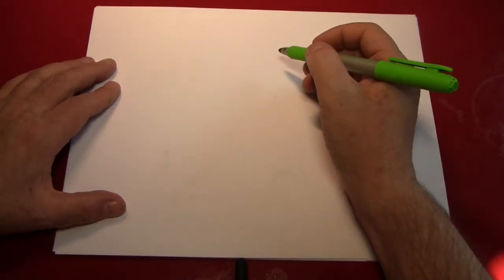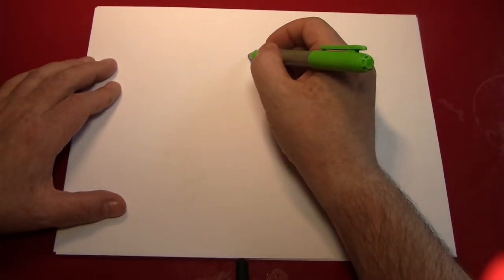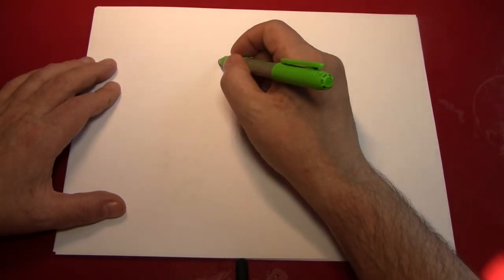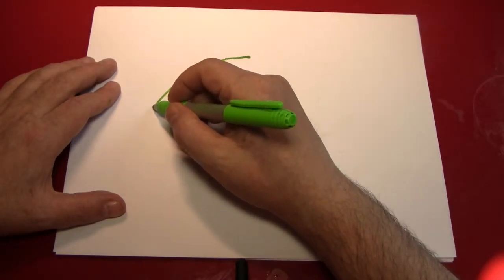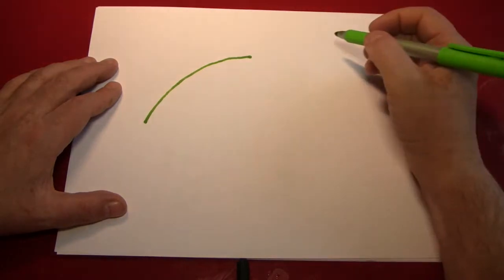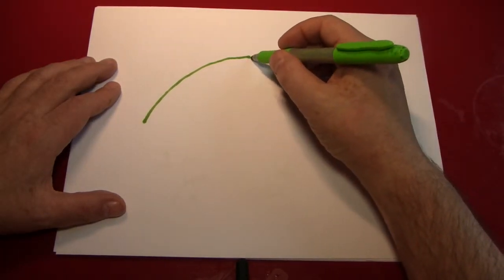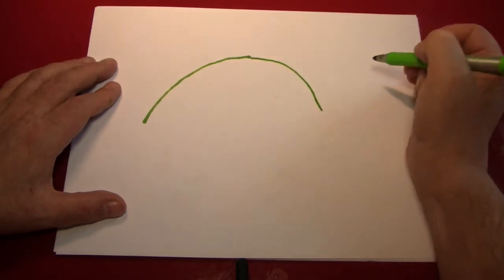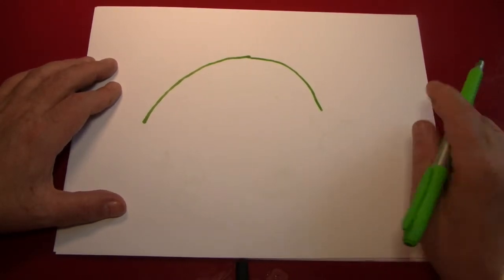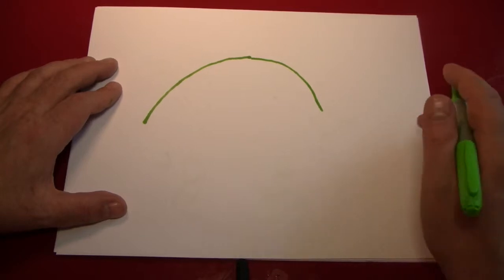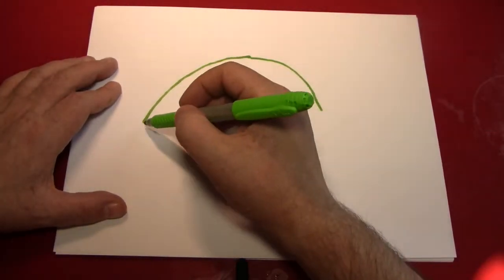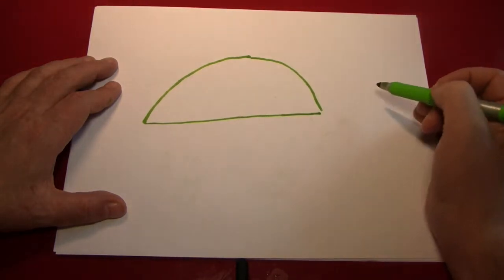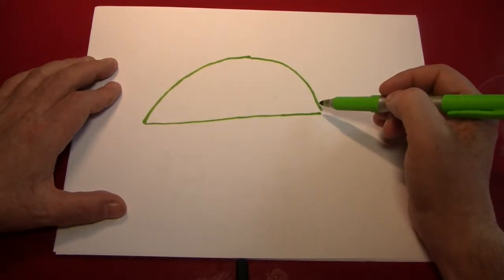Well, tortoises have large round shells, so let's start at the top here and give it a large round shell. Here we are making a curved line down to the left, and then doing the same thing down to the right. Well, that wasn't so hard. Even I didn't mess it up too badly. We can connect these two points with a sort of smooth line, and don't worry too much about whether it's straight or not. Here's the top of our tortoise's shell.